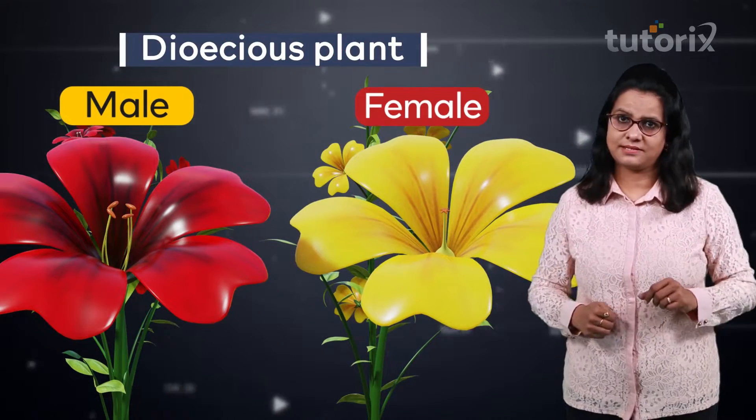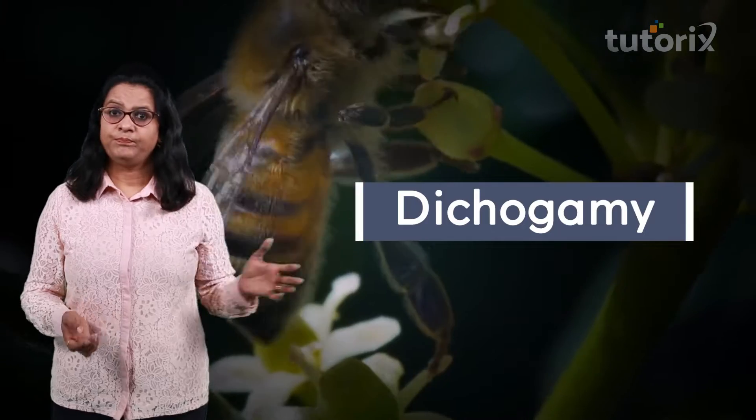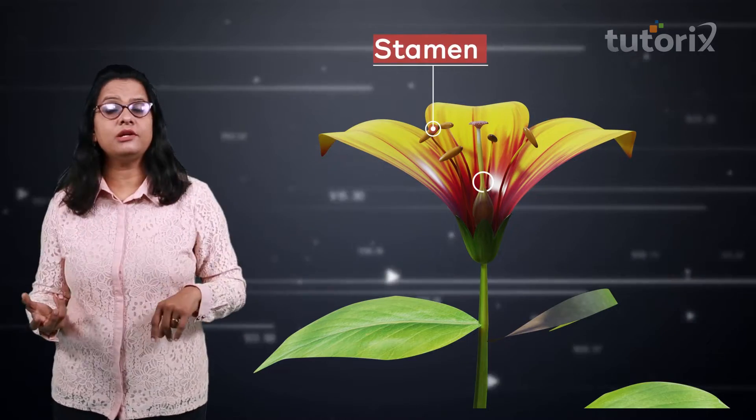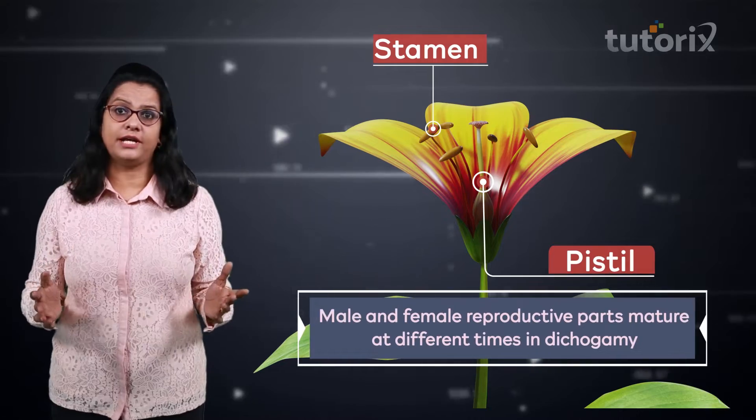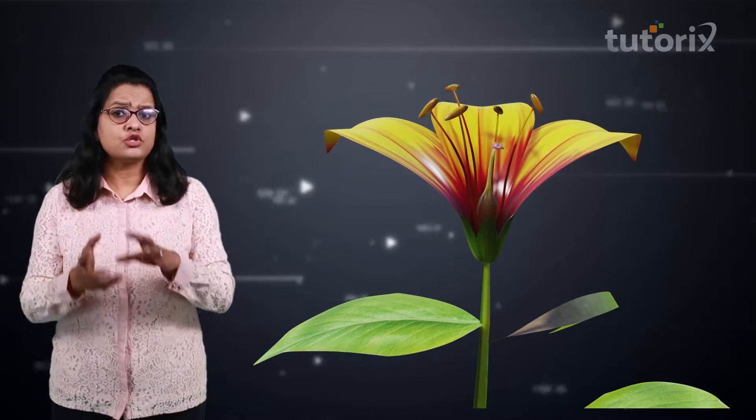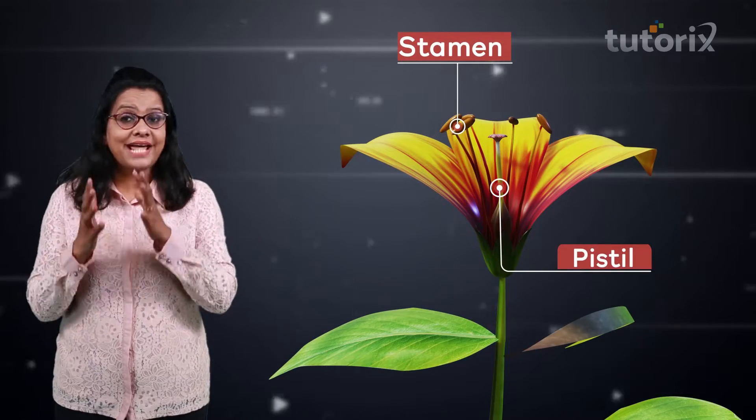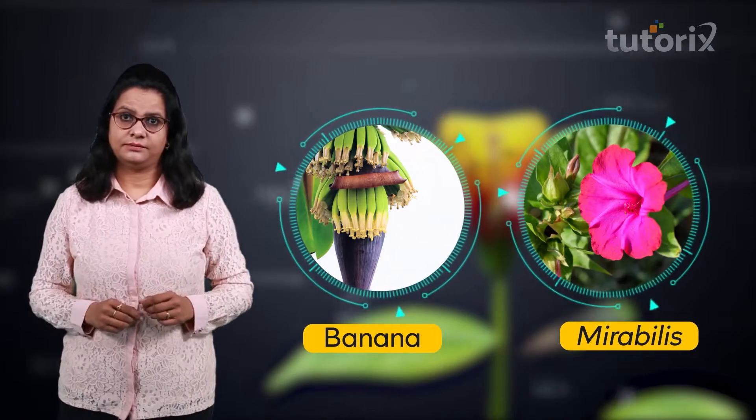Plants in which male flowers are present on one plant and female flowers on a different plant are called dioecious plants. The next adaptation is dicogamy, in which the stamens and the pistil mature at different times, so the mature stamen must search for a matured female part, favoring xenogamy. If stamens mature before the pistil, that condition is called protandry, found in sunflower and salvia. If the pistil matures before the stamens, that is called protogyny, found in banana and Mirabilis.